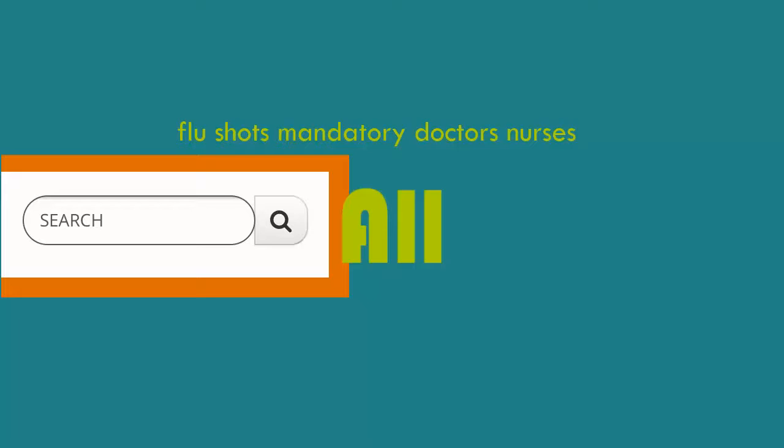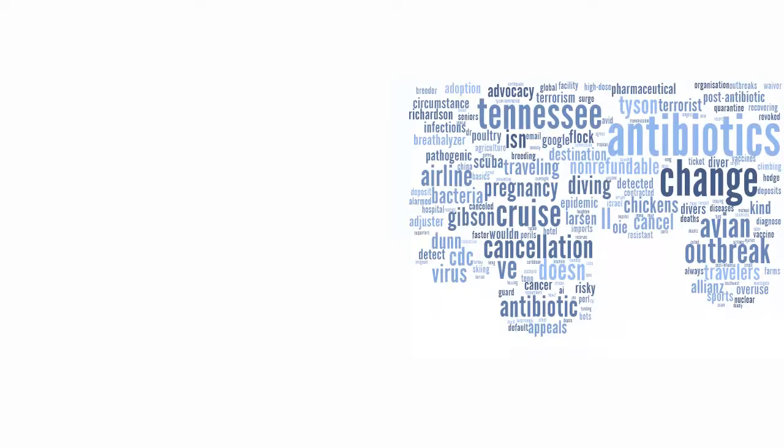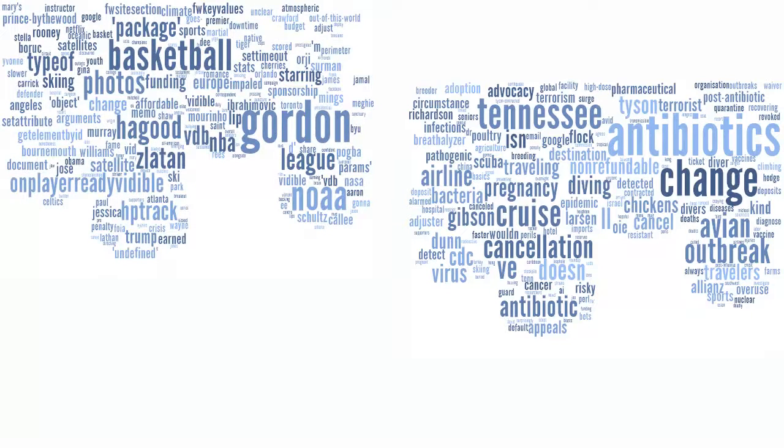The search tools use an implied AND to combine all terms: flu and shots, and mandatory, and doctors, and nurses. That means it will return everything with all of your keywords, even if an article or source has nothing to do with doctors and nurses getting flu shots.